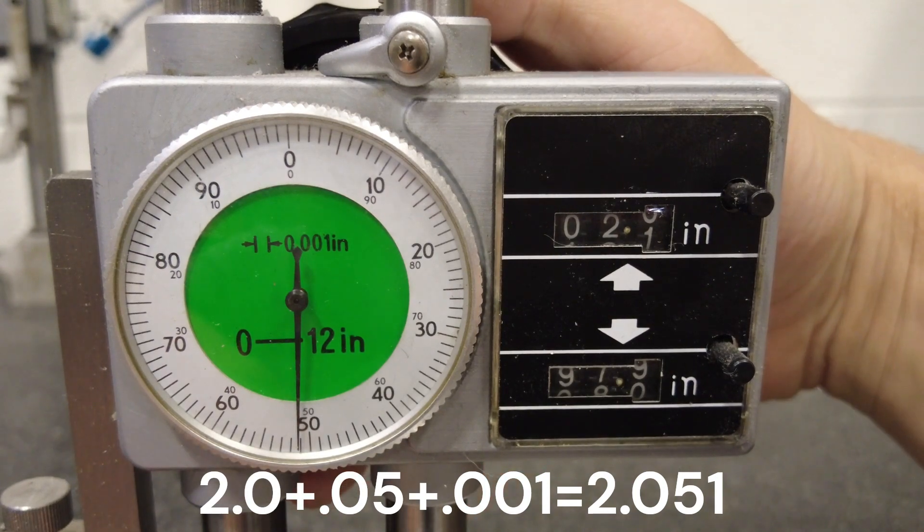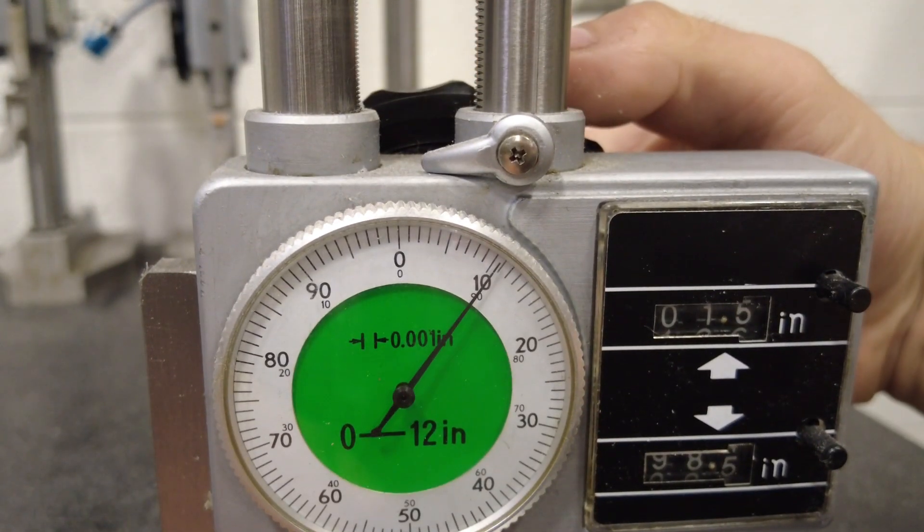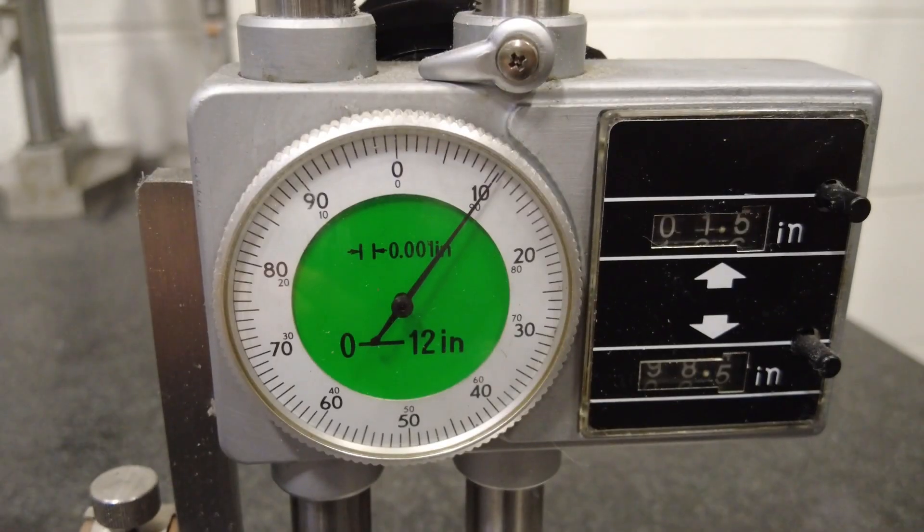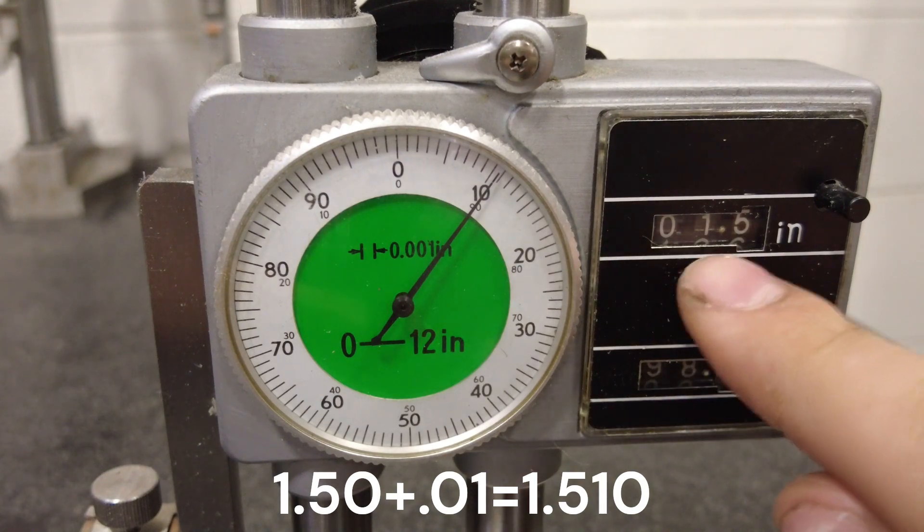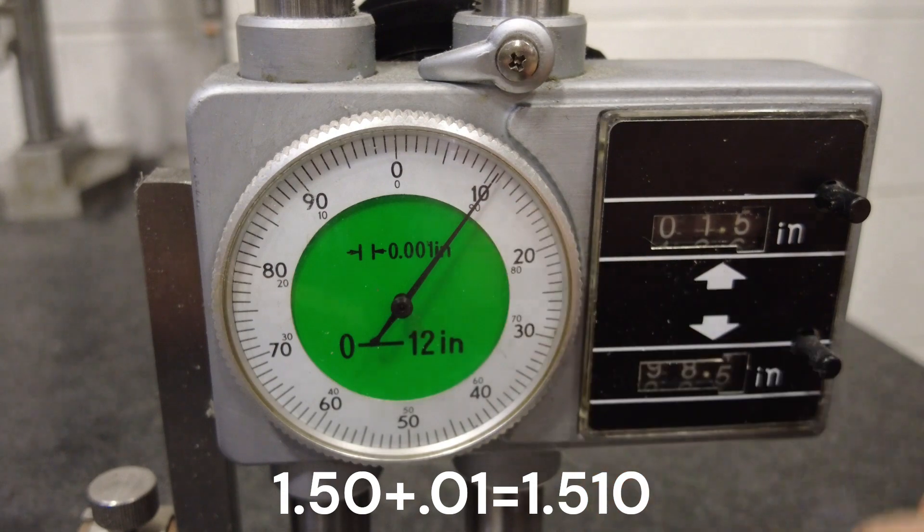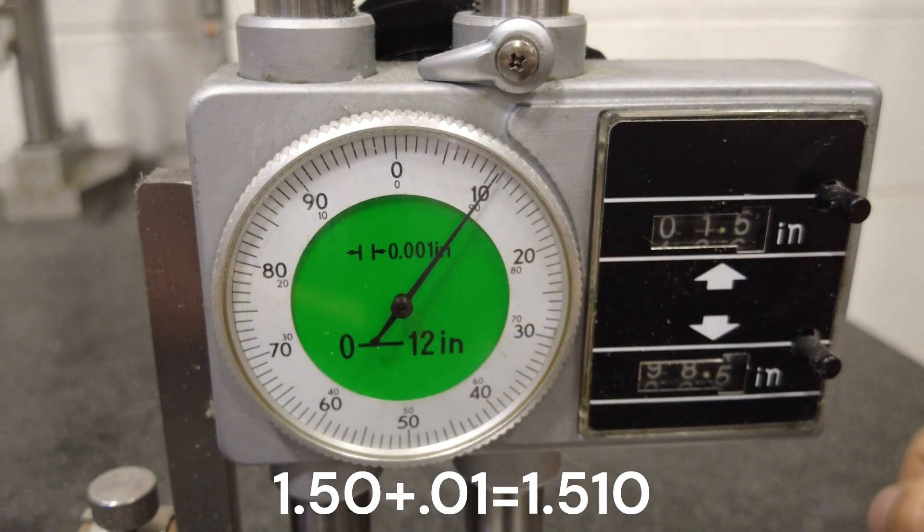Now let's move this down to a different measurement and check that. Right here, this next measurement is going to be 1.5. You can see that on the counter over here. Then we have to add 10 thousandths to that, so it's going to be 1.510 for our final reading.